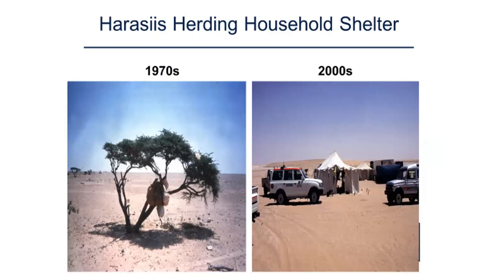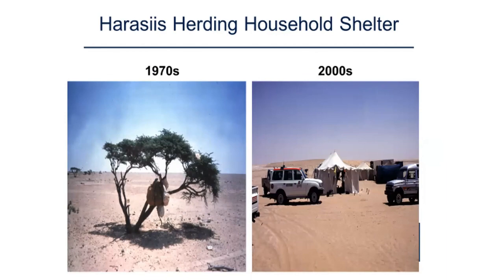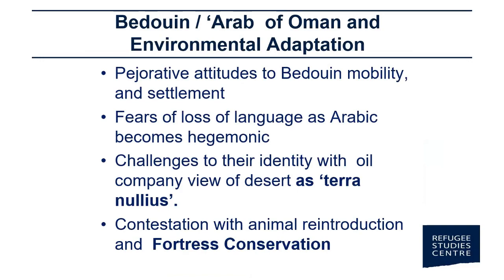This image shows not a permanent campsite but what we call going back to the desert — different households returning because many are now living in cement shelters for much of the year during the school period. There remains that pejorative attitude that comes with development, the fear of loss of their language as Arabic becomes dominant because Harsusi is not taught in schools, and the challenge to their identity because of the oil company's notion of the desert as empty, and the ongoing tension with animal reintroduction conservation.